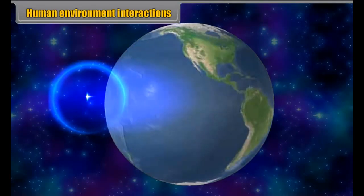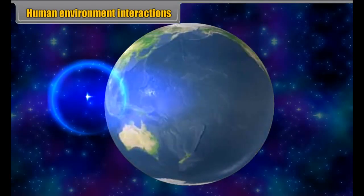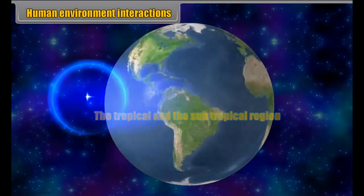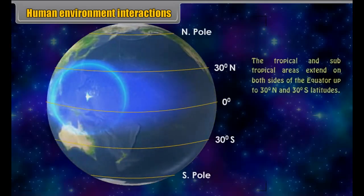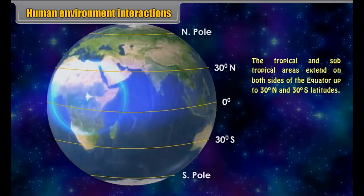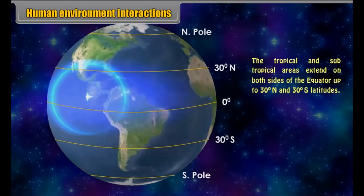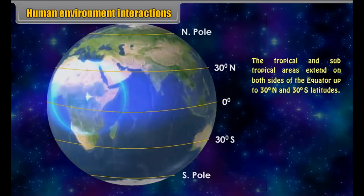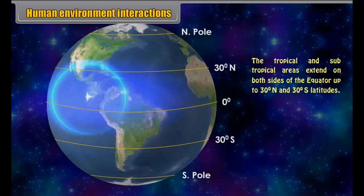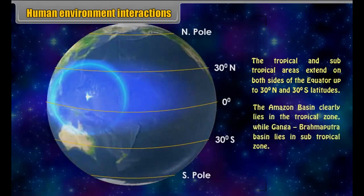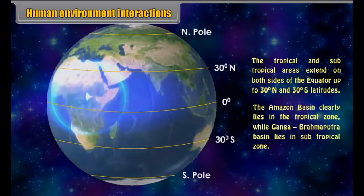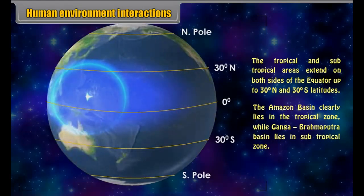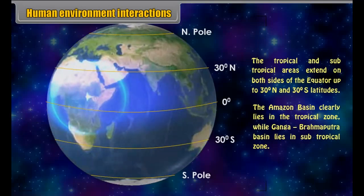Human Environment Interactions: The Tropical and the Subtropical Region. The tropical and subtropical areas extend on both sides of the equator up to 30 degrees north and 30 degrees south latitudes. The Amazon Basin clearly lies in the tropical zone, while the Ganga Brahmaputra Basin lies in the subtropical zone.